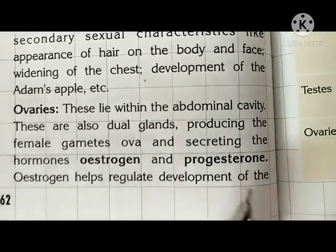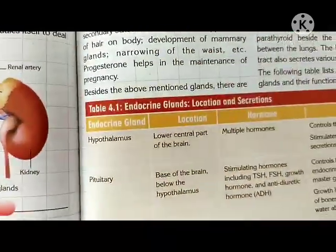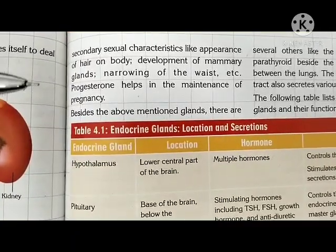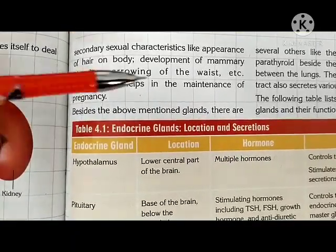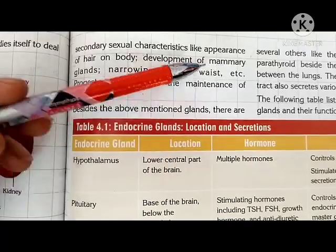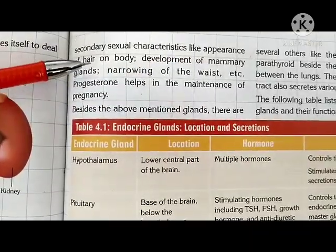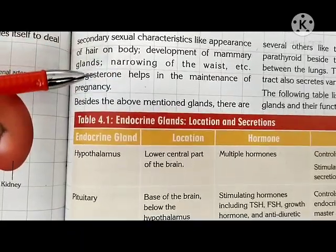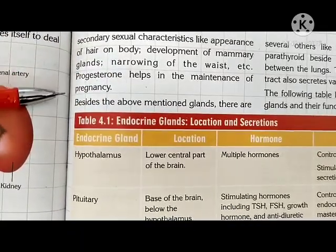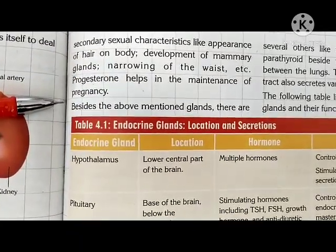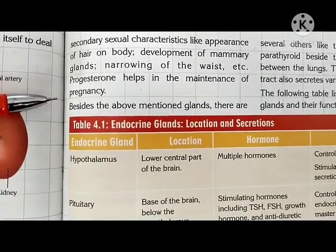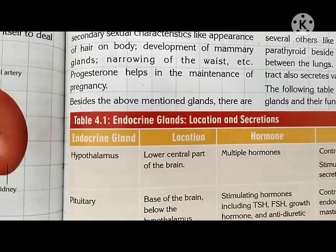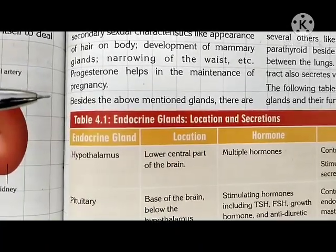Oestrogen helps regulate the development of secondary sexual characters in the female body, such as the development of mammary glands — which are responsible for producing milk — and narrowing of the waist. Progesterone helps in the maintenance of pregnancy.